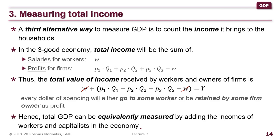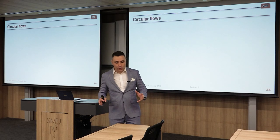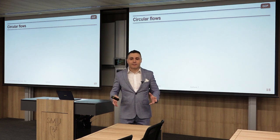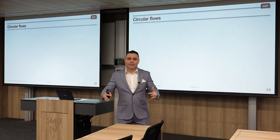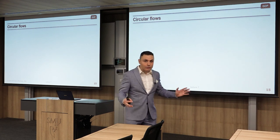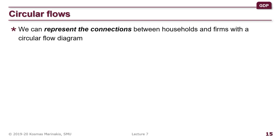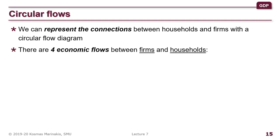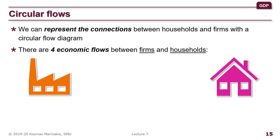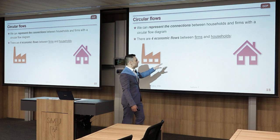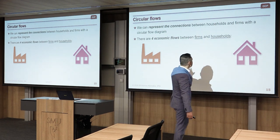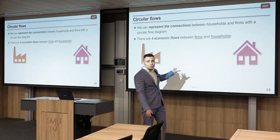Total GDP can equivalently be measured by adding the incomes of workers and capitalists in the economy. Let's put everything together with the circular flow diagram, which is a very helpful graph and a good introduction to the rest of the semester. I want to represent the connections between households and firms. There are four economic flows between firms and households.